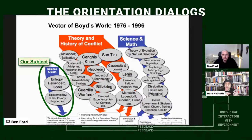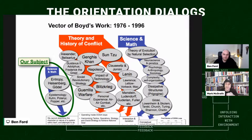We live in a volatile, uncertain, complex, ambiguous world. OODA is a complex process for a complex adaptive system, which is our orientation — our mind, the way we think.